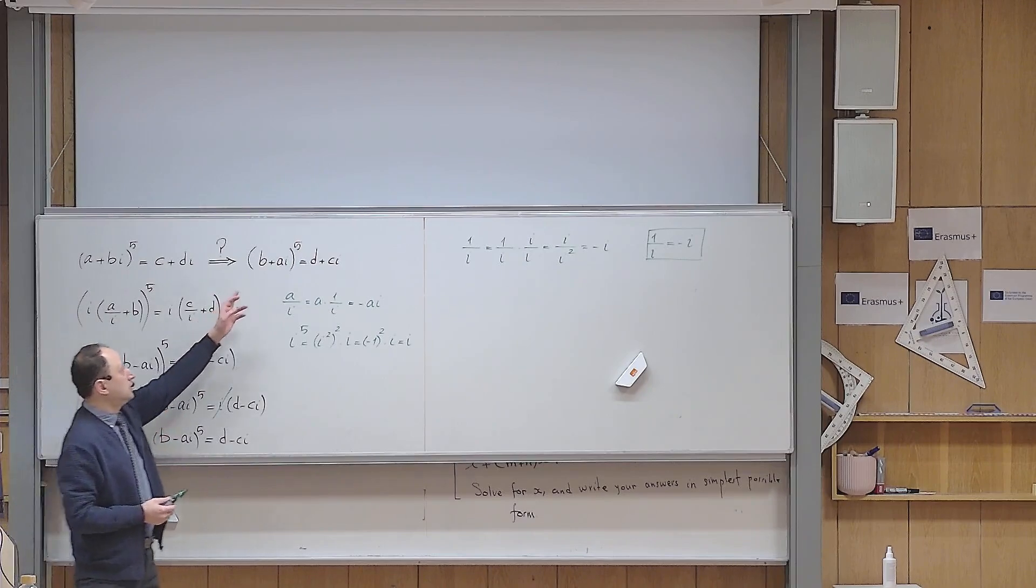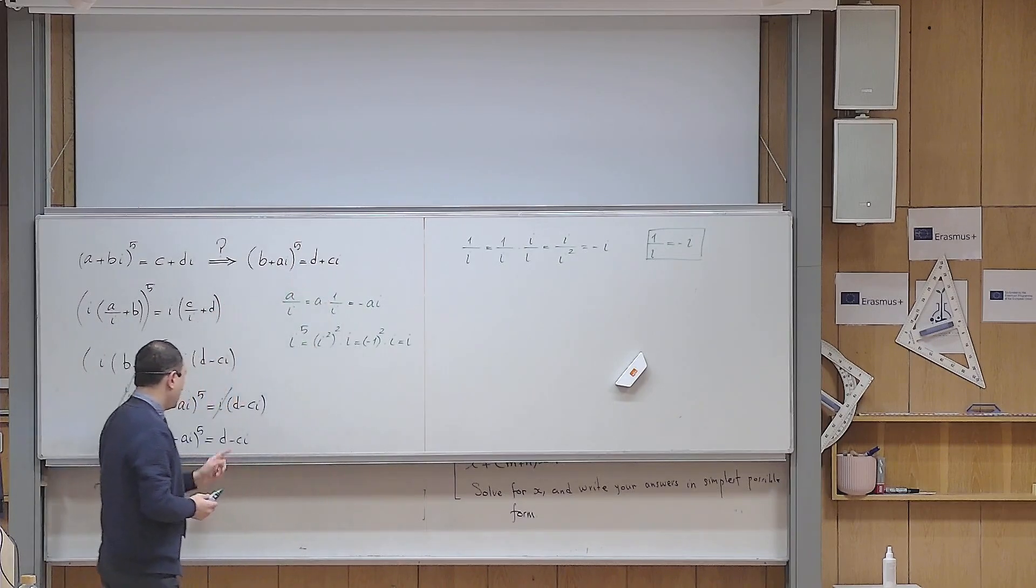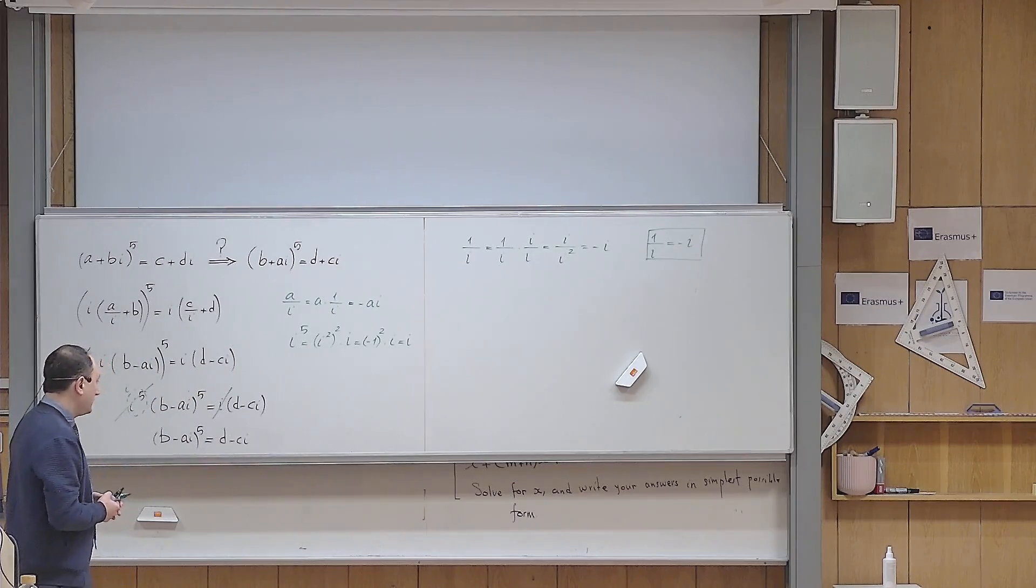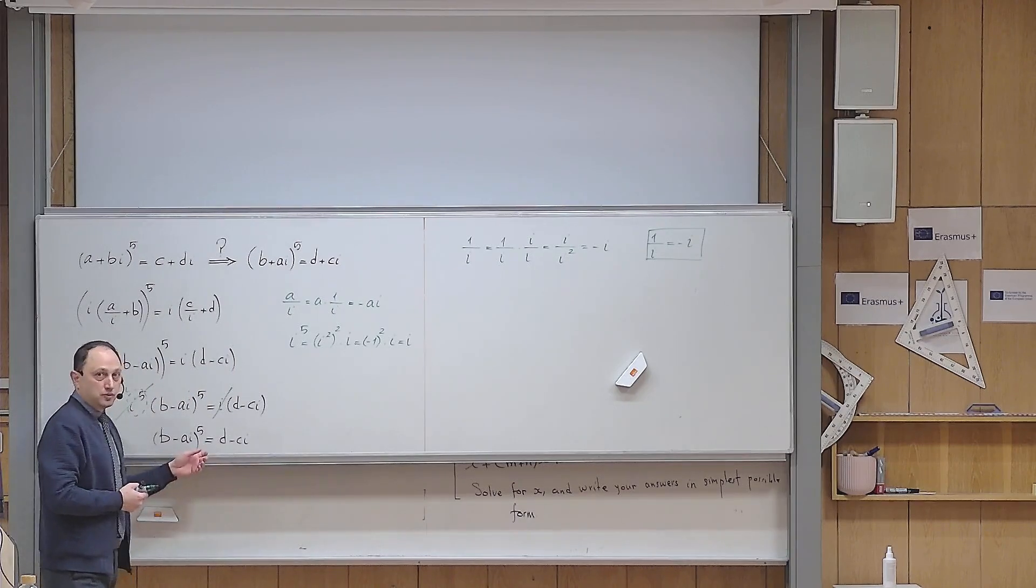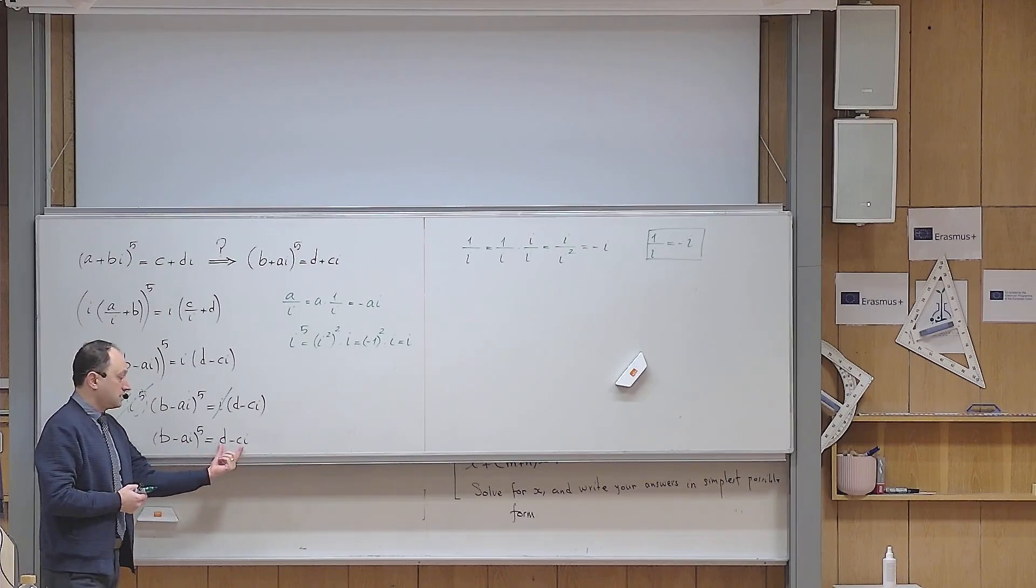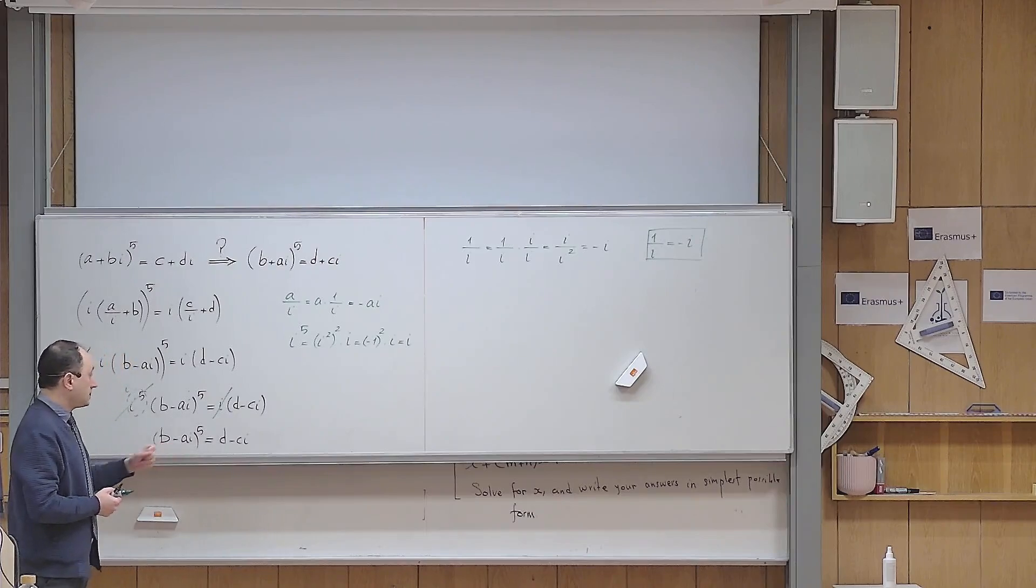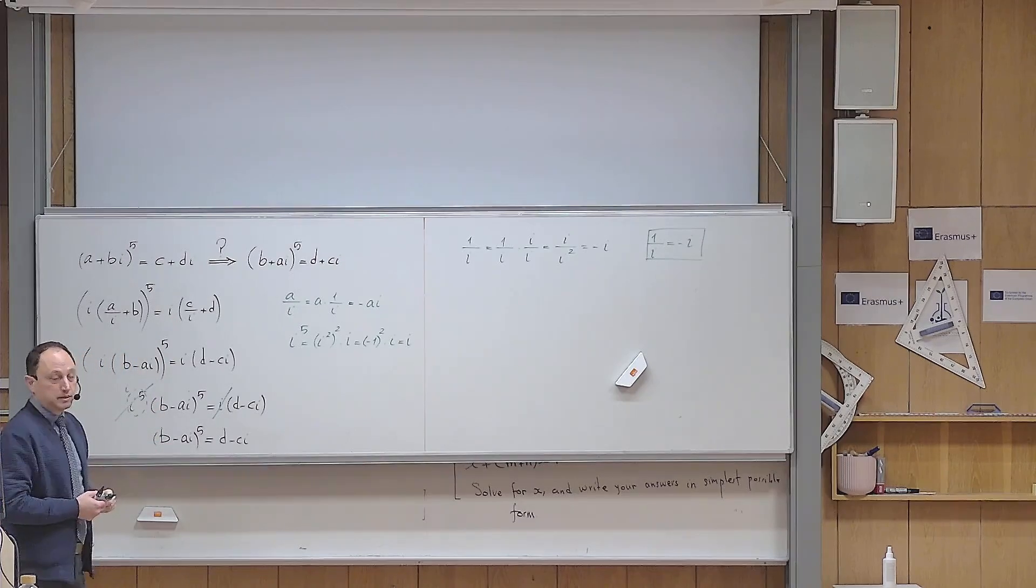But the problem is that now, instead of having a positive sign that I need, I have a negative sign. This probably indicates what to use, and that is the conjugation, because this d minus ci is the conjugate of d plus ci, and b minus ai is also conjugate to b plus ai.